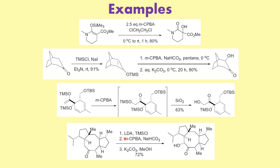Here is the last example in this section — see how interesting it is. Here, they have used LDA and TMS chloride. Whenever we see LDA with TMS chloride, we know this is a kinetically controlled enolate generator. Using LDA, the least substituted enolate is generated. Comparing the alpha positions of this ketone, the less substituted side gives the kinetic enolate. The enol ether forms on that side. After that, meta-chloroperoxybenzoic acid followed by hydrolysis gives the alpha-hydroxylation at that particular position, rather than the other position.